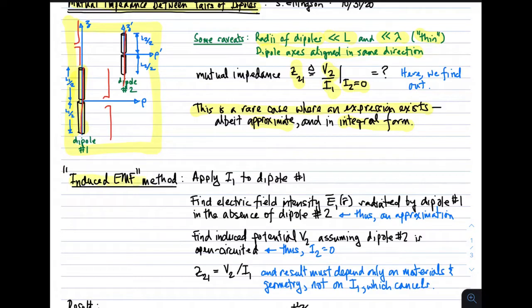The method we're going to consider is called the induced EMF method, where EMF refers to electromotive force. In this method, you apply a current to the first dipole, because we need an I1 to determine mutual impedance. Then we find the electric field intensity E sub 1, which is radiated by dipole number 1.